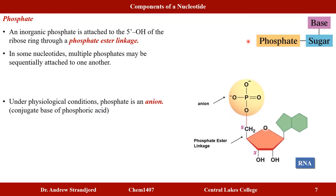The phosphate group is attached to the 5'-hydroxy group of the ribose sugar. In some nucleotides, multiple phosphates may be sequentially attached — giving a diphosphate or triphosphate. Under physiological conditions this phosphate is an anion, represented by negative charges.